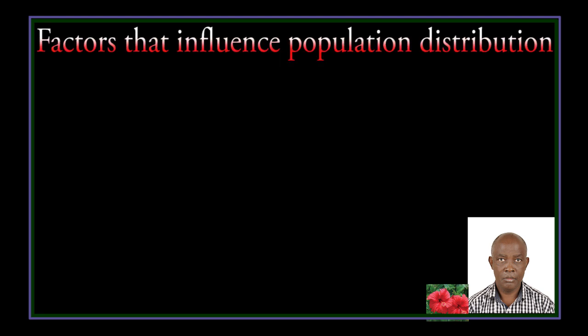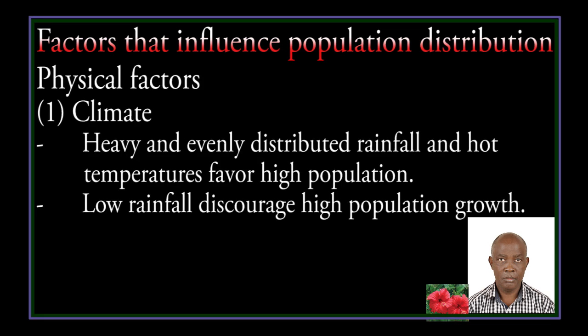Factors that influence population distribution. Physical factors — Climate: heavy and evenly distributed rainfall and hot temperatures favor high population. Low rainfall discourages high population growth.